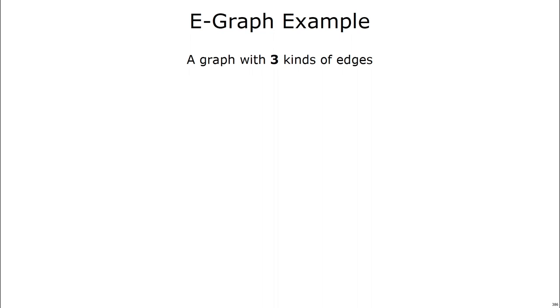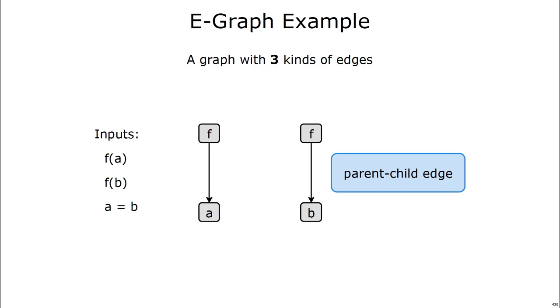Now that I've described what congruence closure is, I'll go over an example so we can start building intuition. An e-graph is a graph with three kinds of edges. Imagine we have inputs f of a, f of b, and a single equality between a and b. We'll start by building our e-graph with f of a and f of b. I'll make a node for f, which will stand for f of a, and I'll make a node for a, and I'll connect them with this directed arrow right here. And I'll also add an f of b to the e-graph. This edge is a parent-child edge, because it describes the parent-child relationship between f and b.